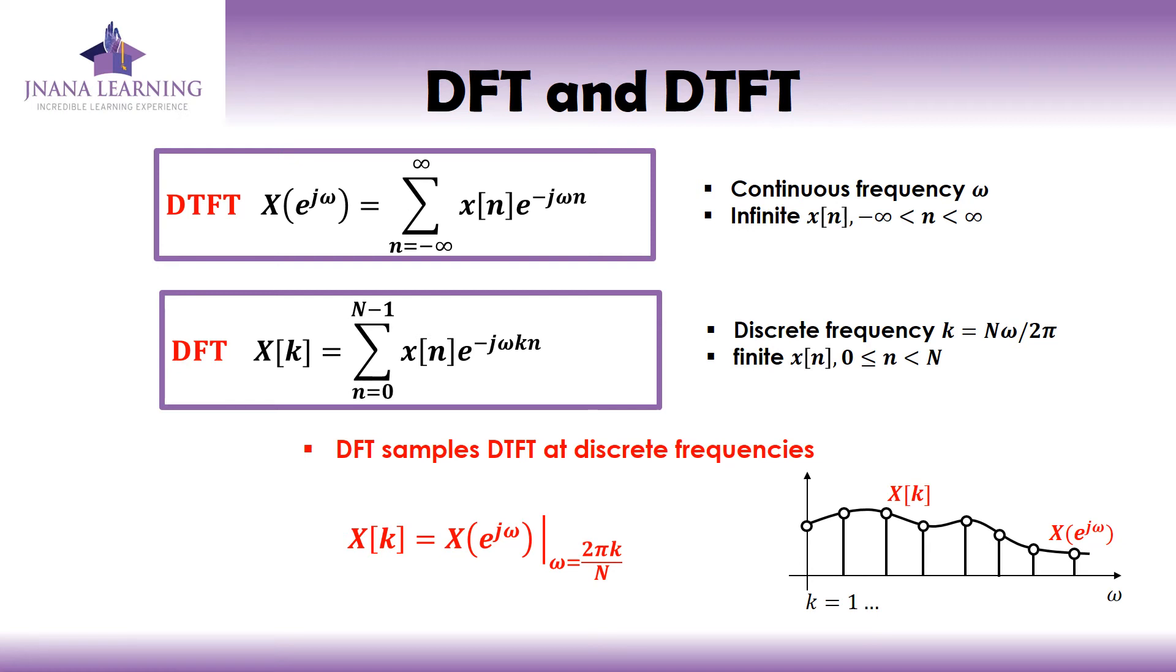In case of DFT, we define it as X[k] equals summation n equals 0 to N minus 1, x[n]e^(-jωkn). Here we have the discrete frequency k equals Nω/2π. x[n] is a finite sequence that is between 0 and capital N.